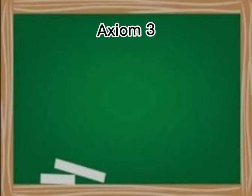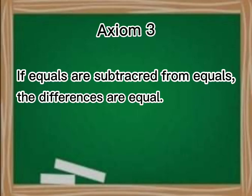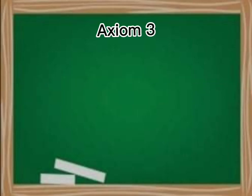Axiom 3: If equals are subtracted from equals, the differences are equal. For example, if A is equal to B and C is equal to D, then A minus C is equal to B minus D.